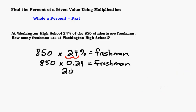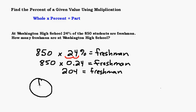850 times 0.24 equals 204. So that tells us 204 equals the number of freshmen. Does this answer make sense? We should always think to ourselves: does this seem reasonable? Well, you've got 850 students, and 24% is very close to 25%. If you have a whole pie, 25% would be one quarter, so it should be pretty close to 850 divided by 4. 800 divided by 4 is 200, so 204 is a good estimate.